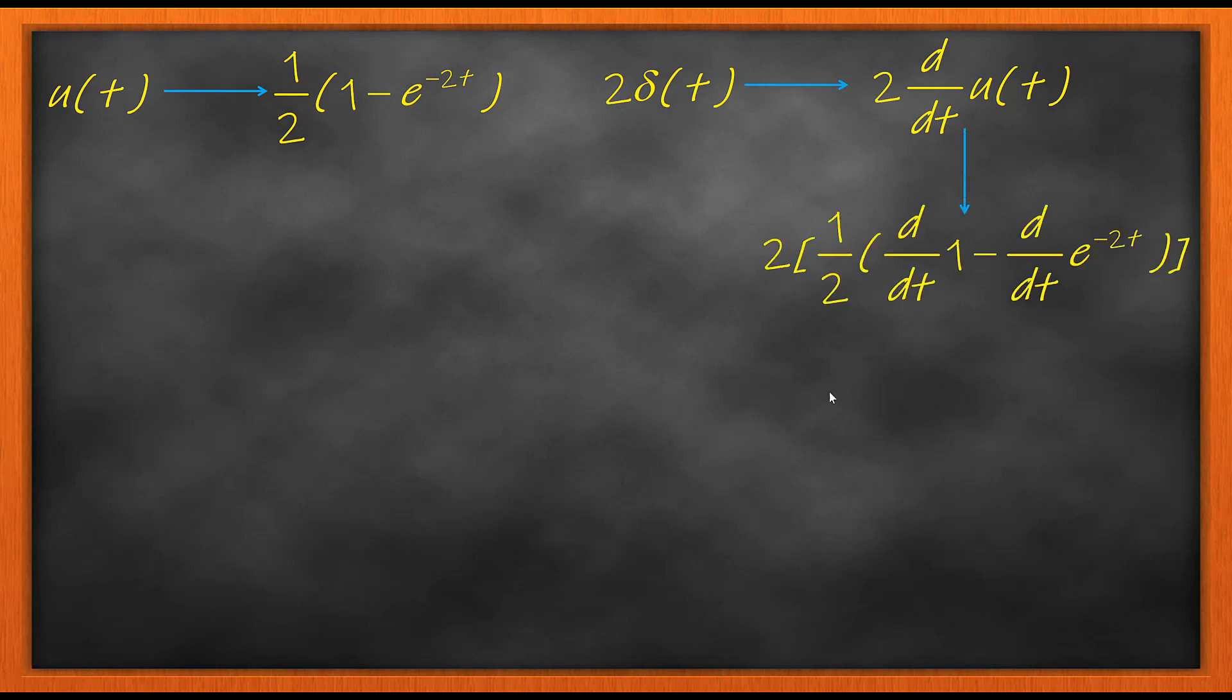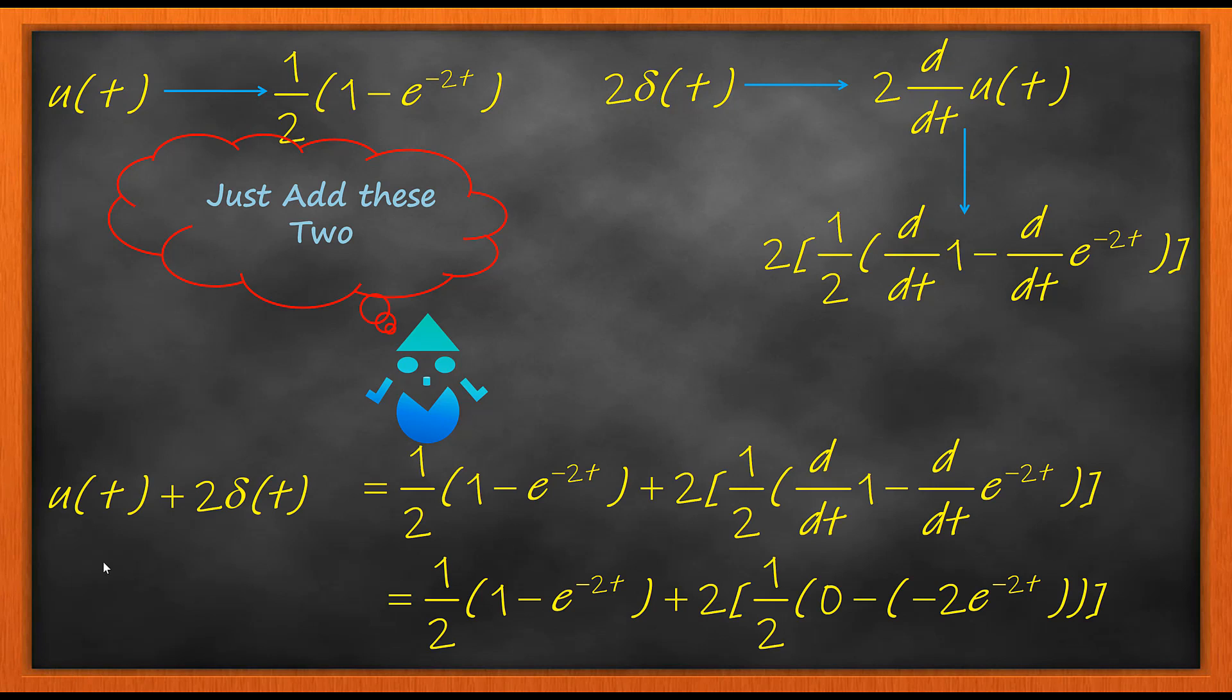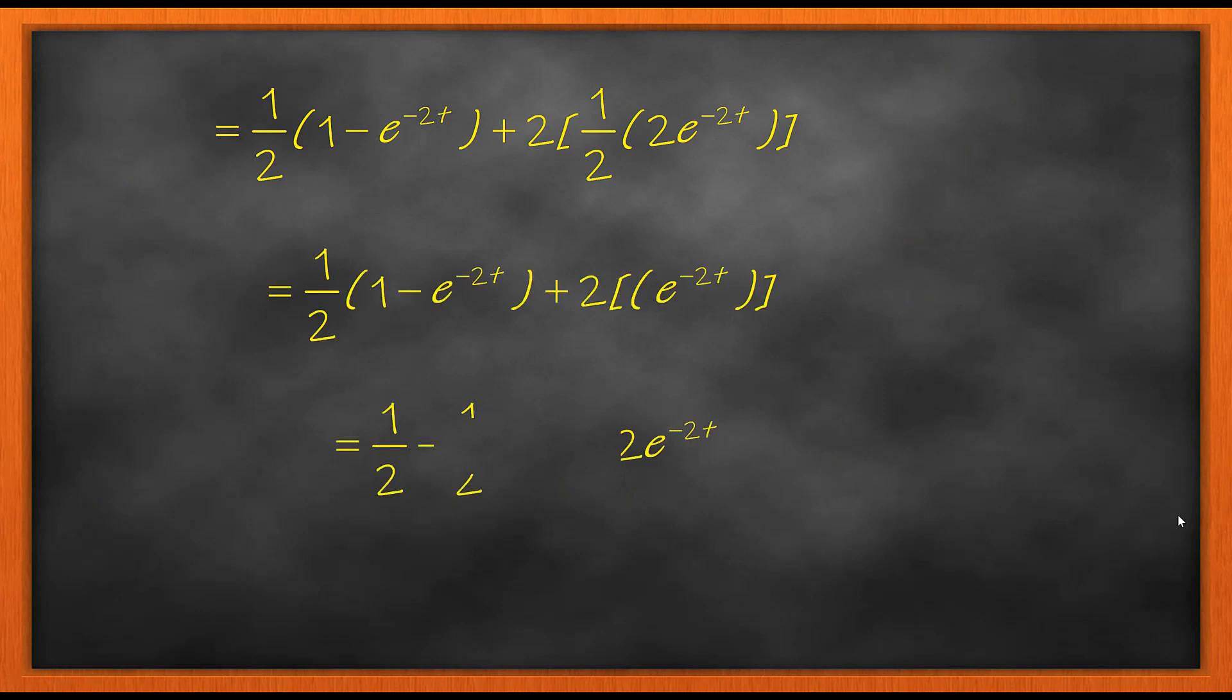Now this question becomes straightforward by applying this formula where 2δ(t) is solved using the differential formula which is 2 d/dt of u(t). The response of u(t) is given as 1/2, so we substitute this in this form, differentiate it, then add these two.